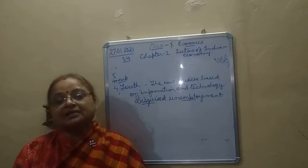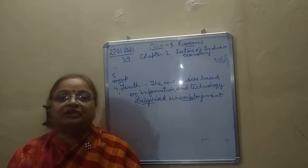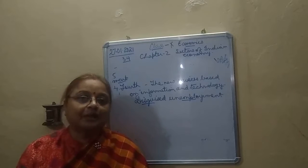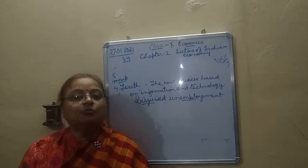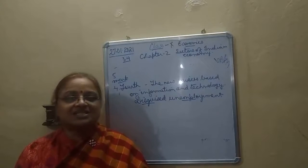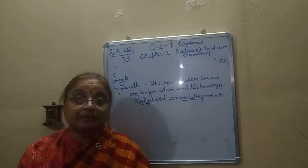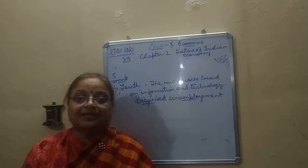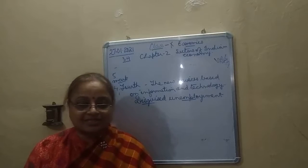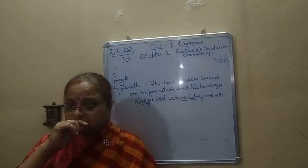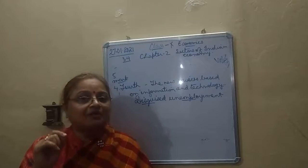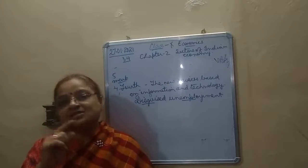We talk about economic development. Last chapter we talked about development — how will the development happen? Development can happen when all the sectors are working in a balanced way. That is why the first chapter in economics was talking about development — how this development takes place. This development is majorly concentrated on the work of different sectors. That is what we have studied.